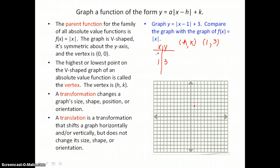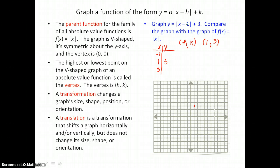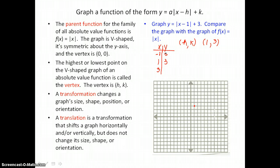I chose them equally spaced on either side of the vertex, so I expect that the y-coordinates will be the same. Letting x equal negative 1 in our equation: negative 1 minus 1 is negative 2, but the absolute value of negative 2 is 2, and 2 plus 3 is 5. So I have the point negative 1, 5 on this v-shape, and I'll graph it in the second quadrant.